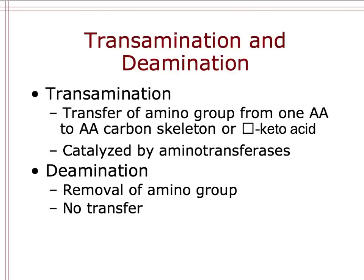In the metabolic processes of turning food amino acids into what we actually need, the removal or movement of parts is referred to as transamination and deamination — particularly the removal of the amino group. Transamination is the transfer of an amino group from one amino acid to a carbon skeleton or alpha-ketoacid, catalyzed by aminotransferases. If we want to completely remove the amino group, that's called deamination, catalyzed by a deaminase — for example, glutamate dehydrogenase.